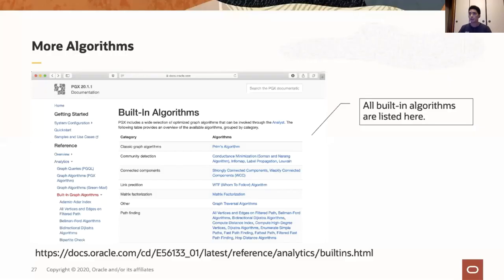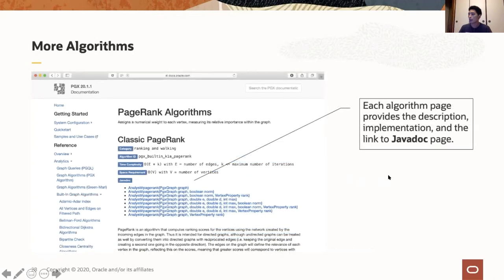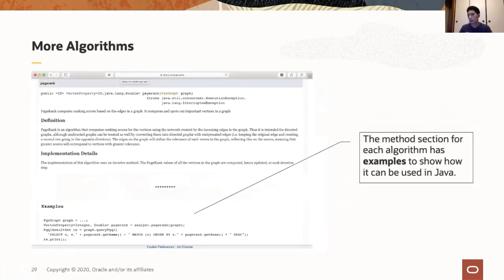Let's go back to the slides. I have introduced three algorithms and their usages, but as Meli mentioned, we have more than 50 algorithms and their variants on graph server. You can check the list of graph algorithms from the documentation — once you click on one of the algorithms, you can go to the description of each algorithm and also find a link to the Javadoc page. So for running those algorithms in JShell, Groovy shell, or Zeppelin, you can refer to the examples provided for each algorithm.